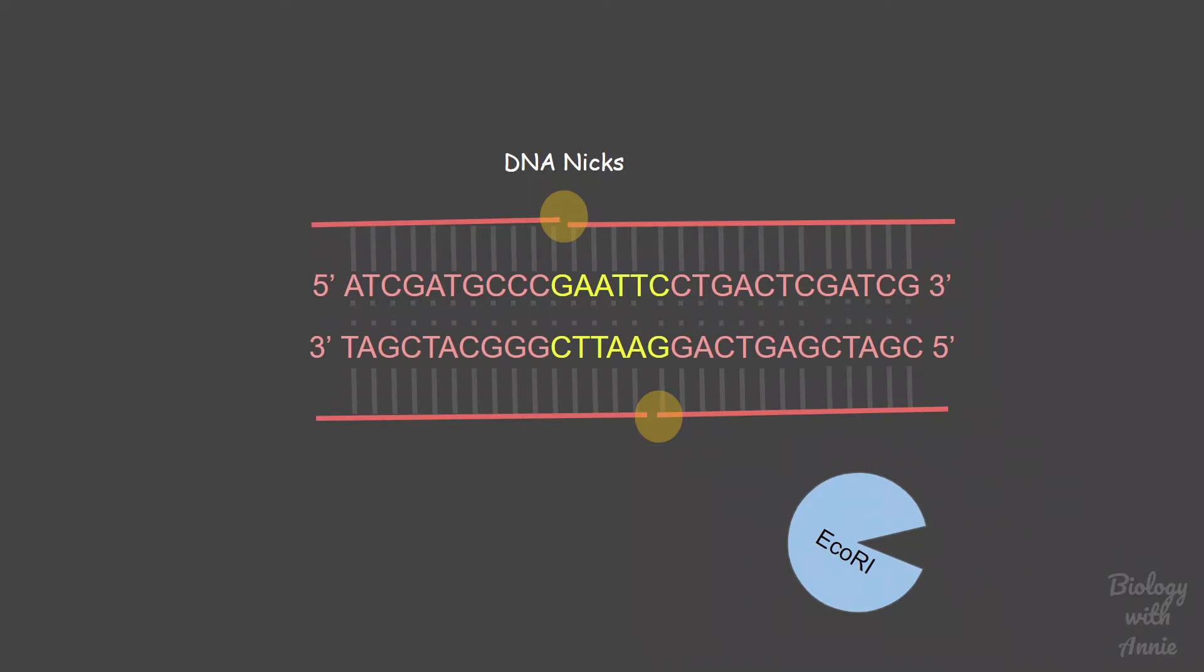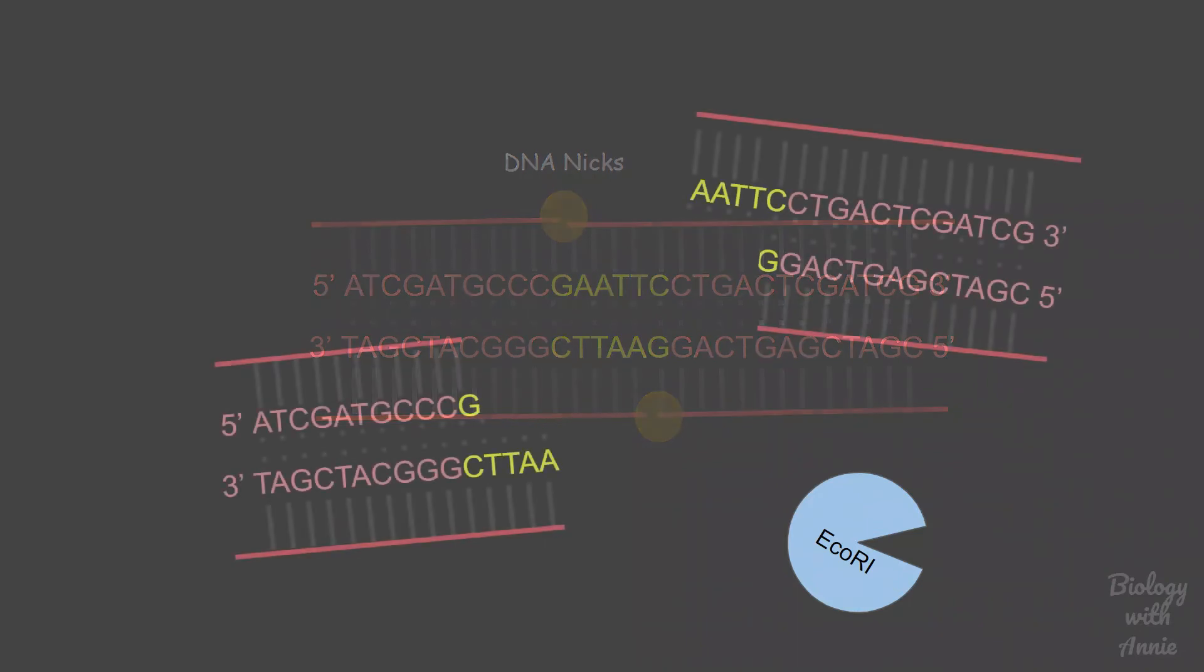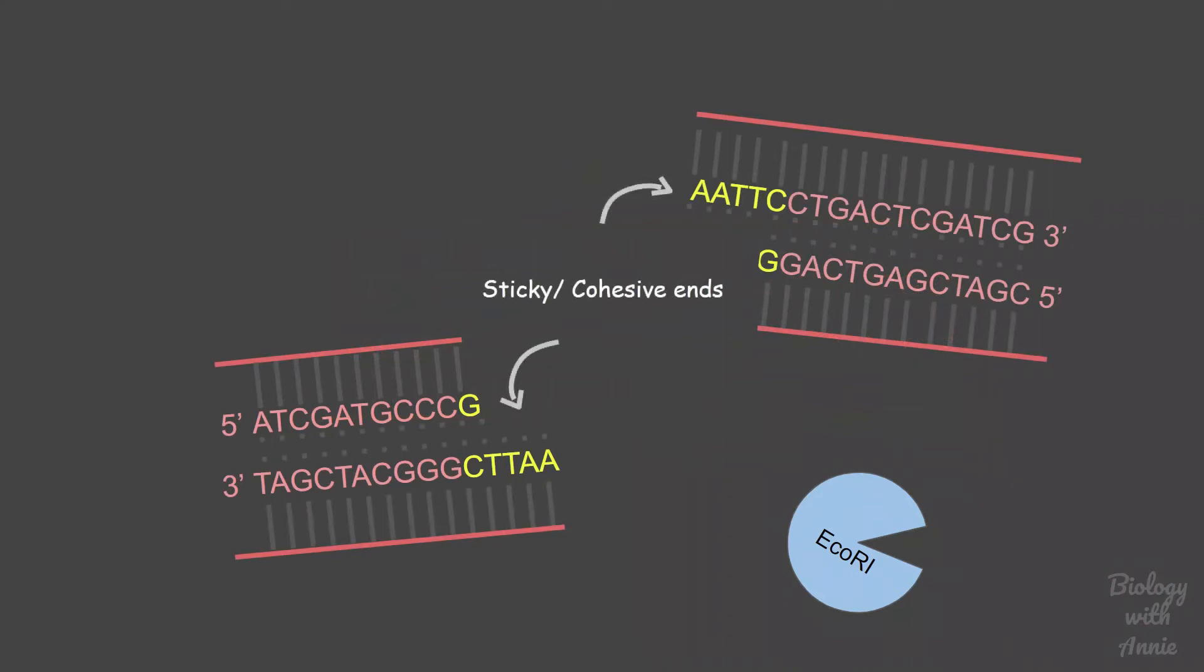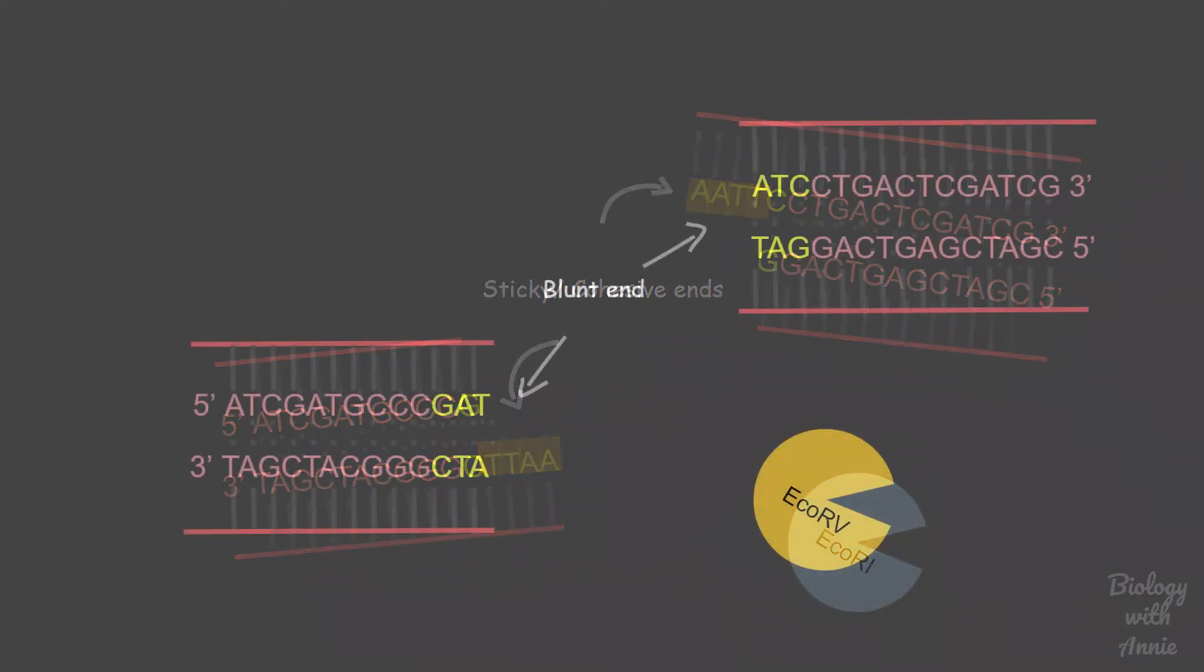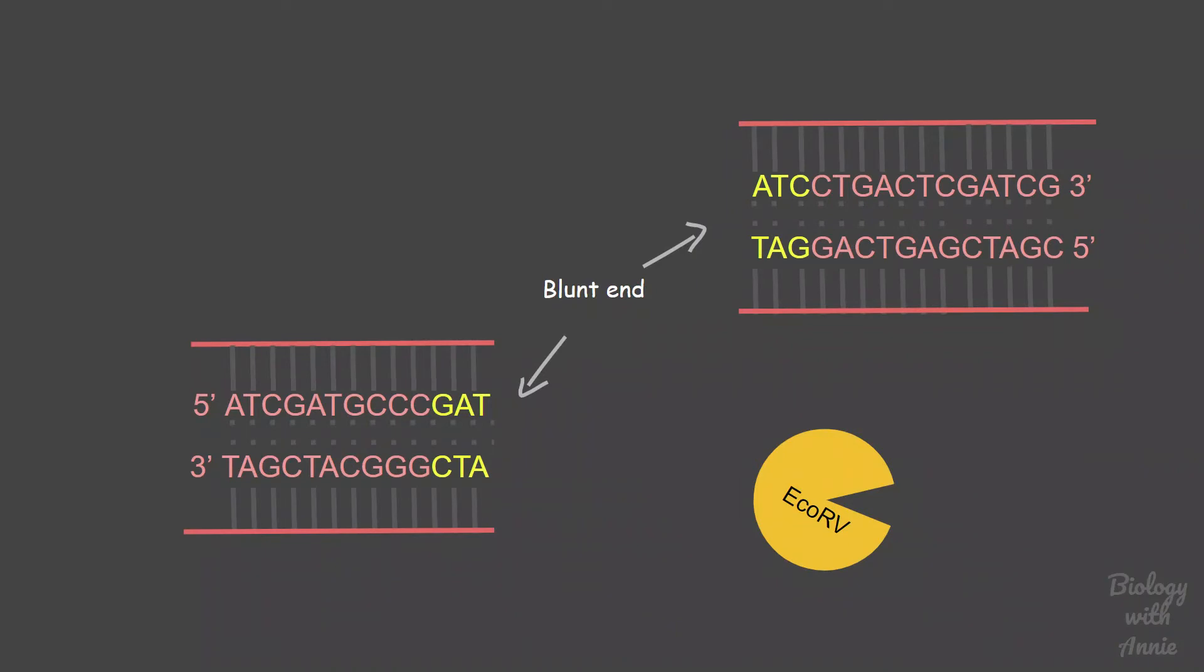EcoR1 digestion produces a nick which is not in the exact center of the restriction site. This results in sticky ends with overhanging nucleotides, whereas blunt ends are those where overhanging nucleotides are absent.